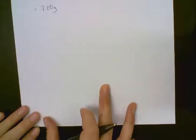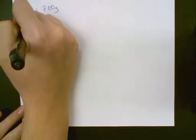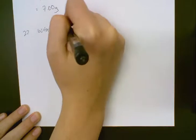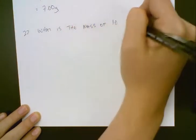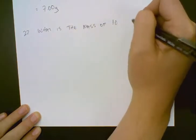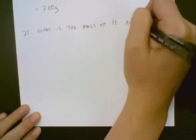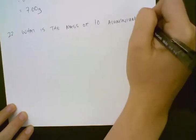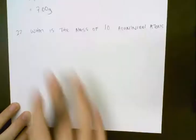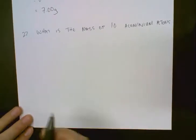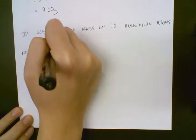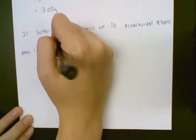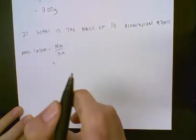The last question we're going to go through is number 22, which says: what is the mass of 10 aluminum atoms? There are two ways to do this — I'm going to show you the easier way. The easiest way uses the formula for the mass of one atom: if we take the molar mass and divide it by Avogadro's number, we'll get the mass of what one atom weighs.